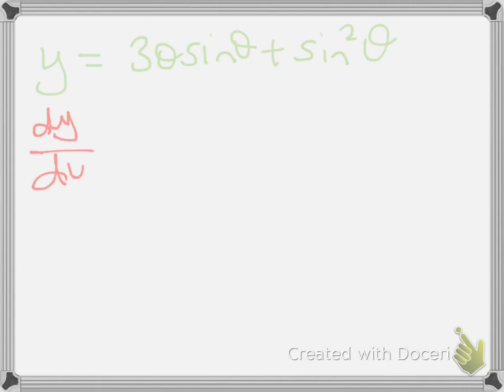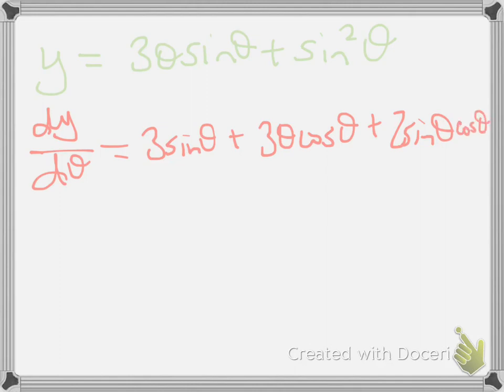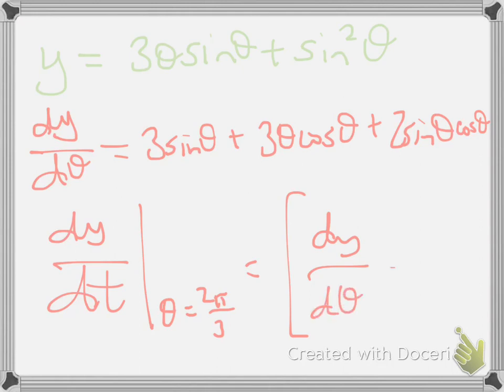dy/dθ will be 3 sin(θ), plus taking the derivative of the θ part, 3θ cos(θ), and then we'll have 2 sin(θ) cos(θ). And then we just need to evaluate this at 2π/3 and multiply by 2, dθ/dt.